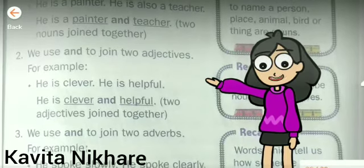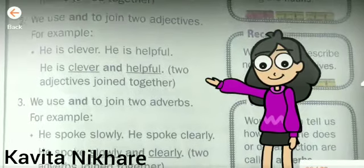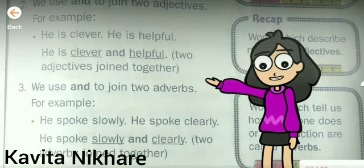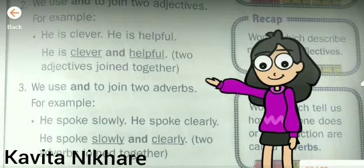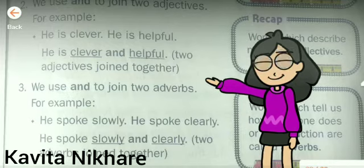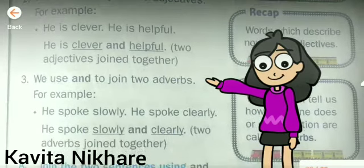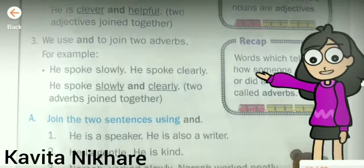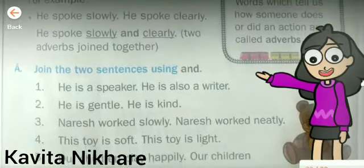Example number three: we use 'and' to join two adverbs. 'He spoke slowly. He spoke clearly.' We are speaking about one person who spoke slowly and clearly, so we join them as: 'He spoke slowly and clearly.'